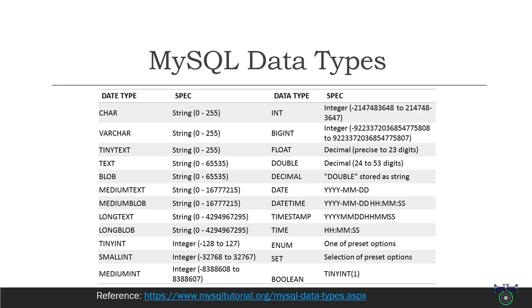The float data type takes up four bytes of storage and has a precision of 23 bits. The double data type takes up eight bytes of storage and has a precision of 53 bits.